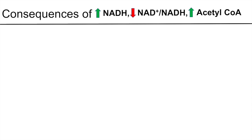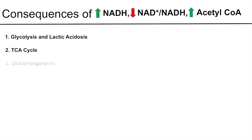Since ethanol metabolism leads to an increase in NADH, a decrease in the NAD+/NADH ratio, and an increase in acetyl-CoA, the consequences to other metabolic pathways include: dysregulation of glycolysis, which can lead to lactic acidosis; alteration of the TCA cycle; suppression of gluconeogenesis; and suppression of fatty acid oxidation.